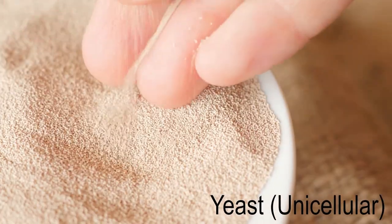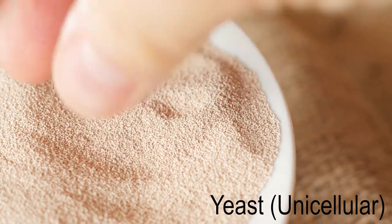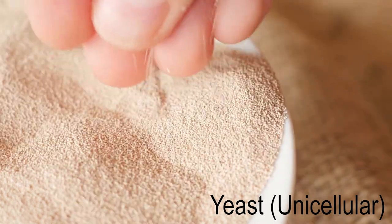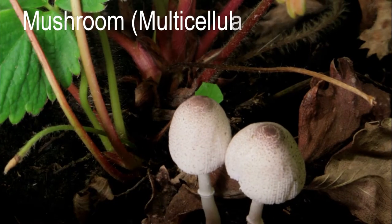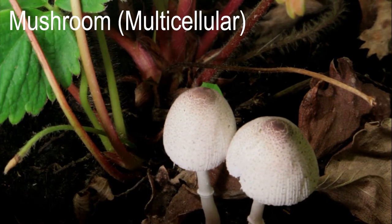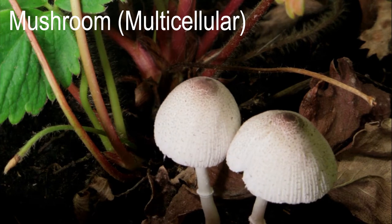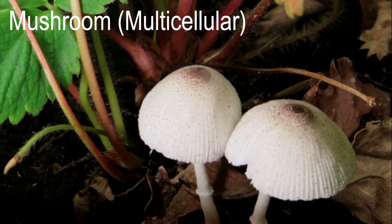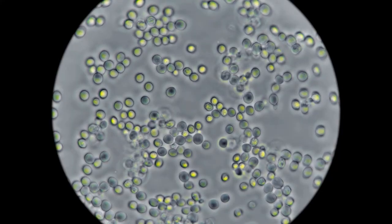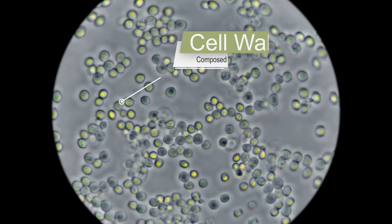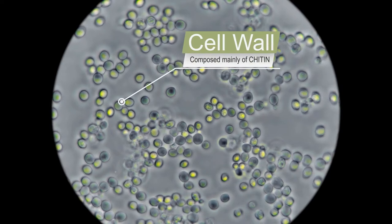Some fungi like yeasts are unicellular, while others like mushrooms are multicellular. Fungi have eukaryotic cells, with their cell walls made up of chitin.